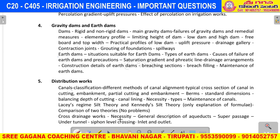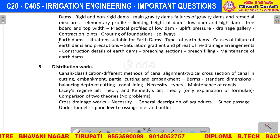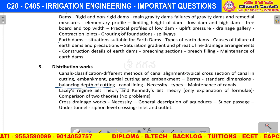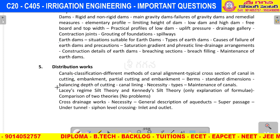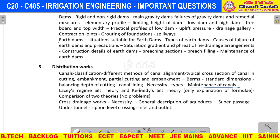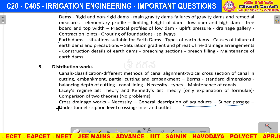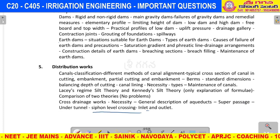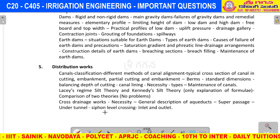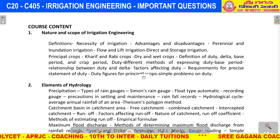Next, distribution works — 8-mark question. Canal alignment — different methods of canal alignment. Balancing depth of cutting — balancing depth of cutting for canals. Maintenance of canals. Different cross drainage works: aqueduct, super passage, tunnel, siphon, level crossing, inlet and outlet — cross drainage works explained. Three marks: definitely important — aqueduct and super passage definitions. Units and definitions very very important.